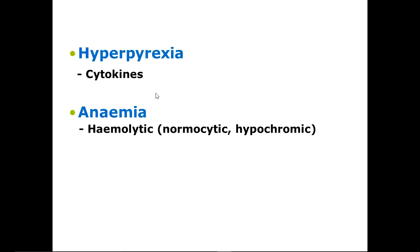Then there is hyperpyrexia. Because of certain cytokines like interleukins and tumor necrosis factor, which are responsible for normally producing rigors and chills, the fever may rise up to 106 degrees Fahrenheit or even higher. The anemia in malaria is of the hemolytic type — the size of the RBCs is normal but hemoglobin is less, so they are normochromic normocytic.